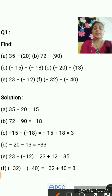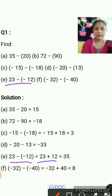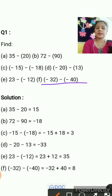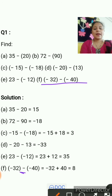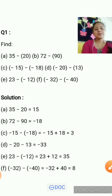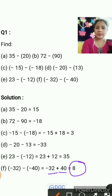Next question is 23 minus minus 12. Minus minus is plus, so it becomes 23 plus 12, which equals 35. Then question F: minus 32 minus minus 40. Minus minus becomes plus, so minus 32 plus 40. Plus minus is minus, so 40 minus 32 is 8, and it is positive 8 because the greater value is positive.